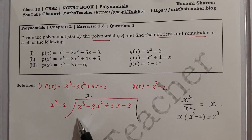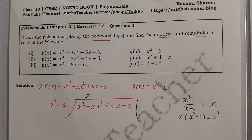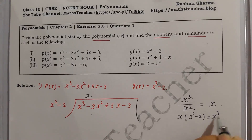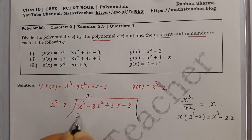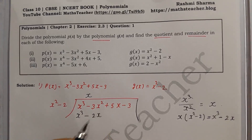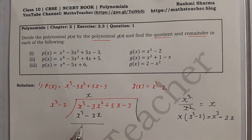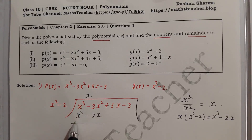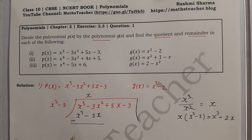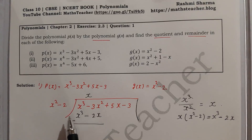Now we multiply our quotient term x by the divisor x² minus 2. So x times x² gives x³, and x times 2 gives 2x. We write x³ minus 2x below the dividend and then change the sign to subtract, so plus becomes minus and minus becomes plus.